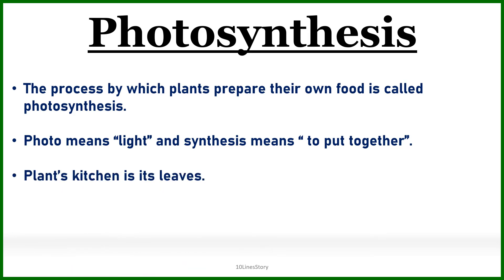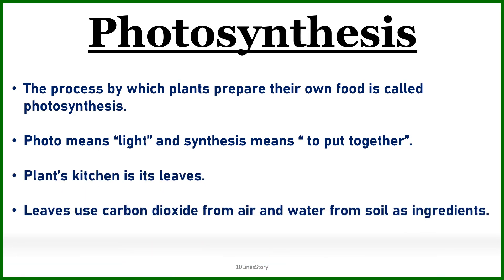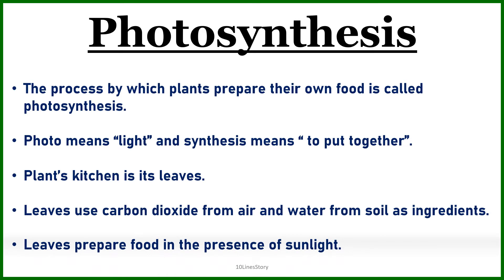A plant's kitchen is its leaves. Leaves use carbon dioxide from air and water from soil as ingredients. Leaves prepare food in the presence of sunlight.